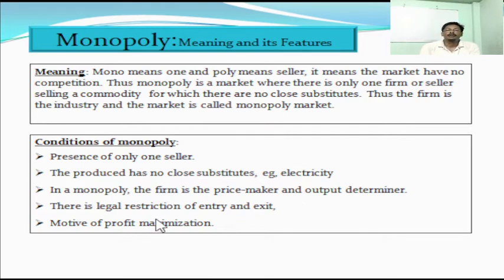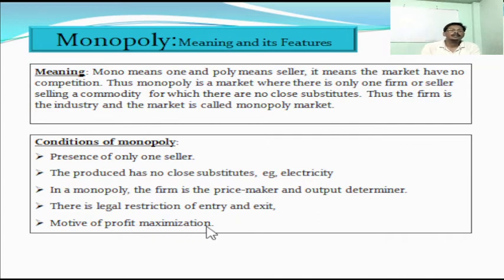Fourth, there is legal restriction of entry and exit. This is the licensing system imposed by the government to keep the market monopolized. Last, that is profit maximization, which is the sole objective of a seller or producer, whatever may be the market condition.